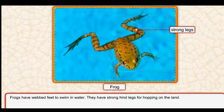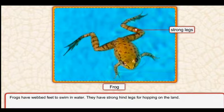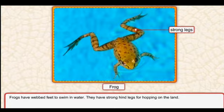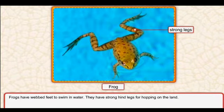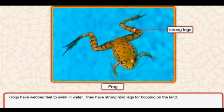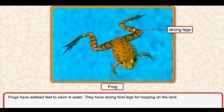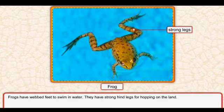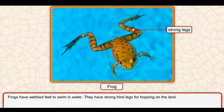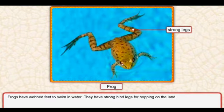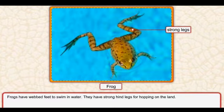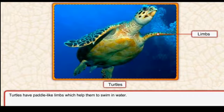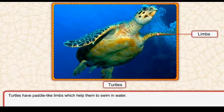Frogs have webbed feet to swim in water. Frogs ke paas webbed feet hote hain jis ke zariye woh paani mein swim karte hain, tairte hain. They also have strong hind legs - unke paas mazboot pichli do taangein hoti hain - for hopping on land, zameen par uchhal kar chalne ke liye.